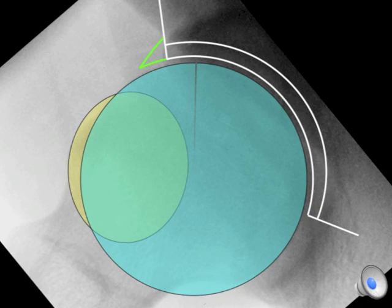This is an x-ray showing cam type impingement. The blue area is the normal round ball, with the yellow area being the bump off of the ball.